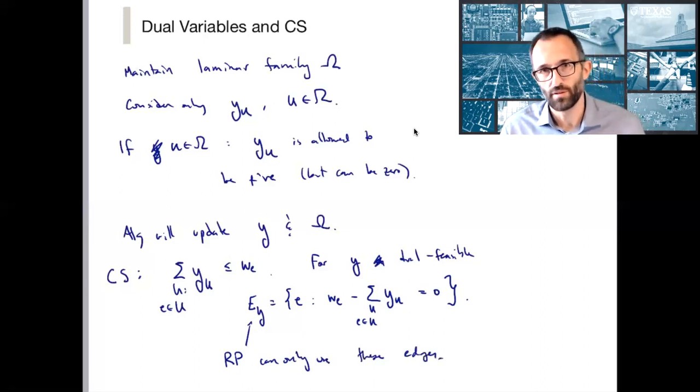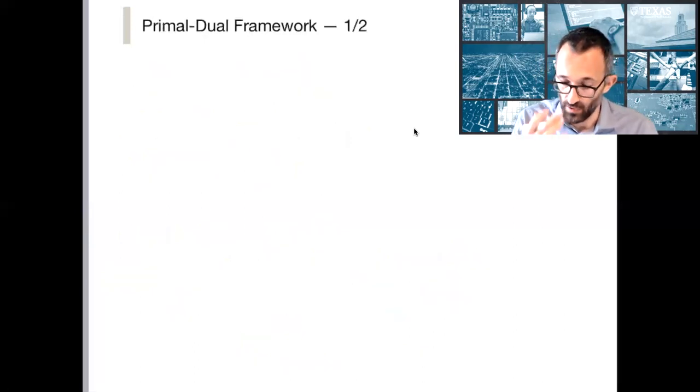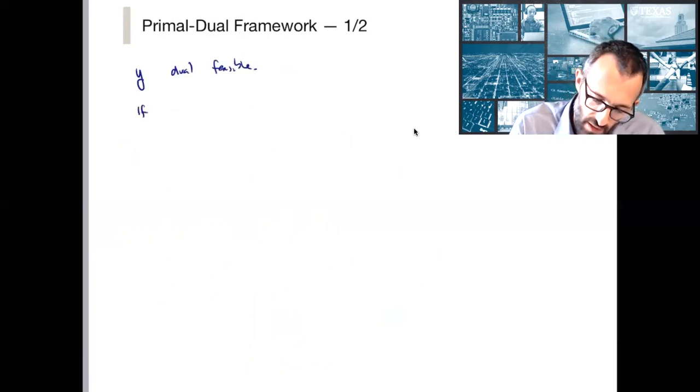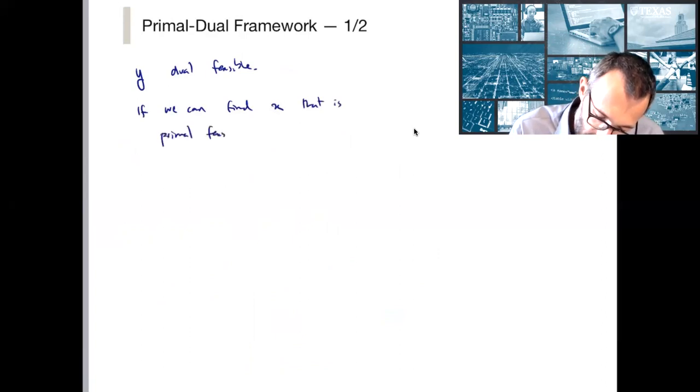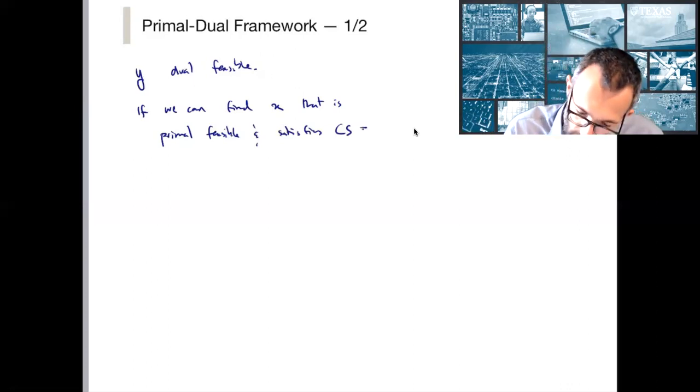So let's recall the philosophy behind the primal-dual method and see a little bit more carefully why this is going to be useful for us. Why is it that when I solve the restricted primal only using these edges, what is it that I expect? How is that going to help me? So let's recall the primal-dual framework. Again, we start with y dual feasible. And the key point is that if we can find x that is primal feasible and satisfies complementary slackness, note that in order to do this, you do not need to even think about the objective, then we're done.